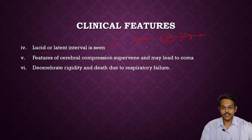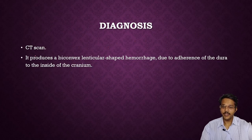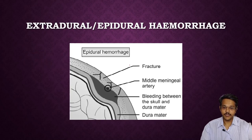Features of cerebral compression may be present, which may lead to coma. There is also decerebrate rigidity and respiratory failure seen in cases of extradural hemorrhage. Diagnosis of hemorrhage is mainly by CT scan; in CT scan it looks like a biconvex lenticular-shaped hemorrhage, mainly due to the adherence of the dura to the inside of the cranium.